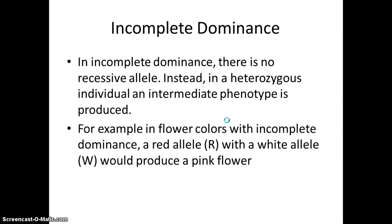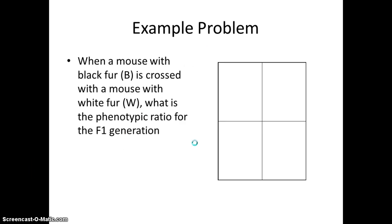So in incomplete dominance, there's no recessive allele. Instead, if you have two different alleles, they're going to produce an intermediate phenotype, or a blend of the two phenotypes. So for example, in flowers, if the trait exhibits incomplete dominance, and they have to say that it exhibits incomplete dominance, if you have a flower with a red allele and a flower with a white allele, instead of red being dominant over white, if it has incomplete dominance, it's going to blend and produce a pink flower. Notice that there are no lowercase letters, because in this case, nothing is dominant.